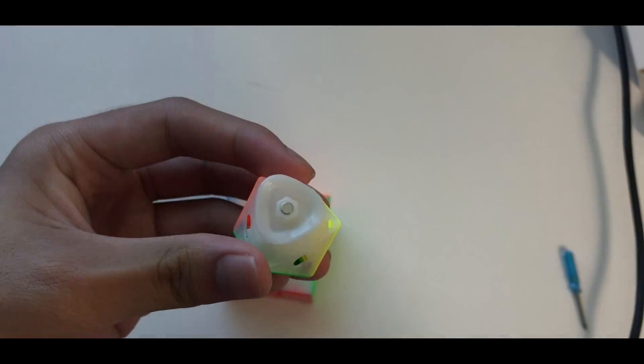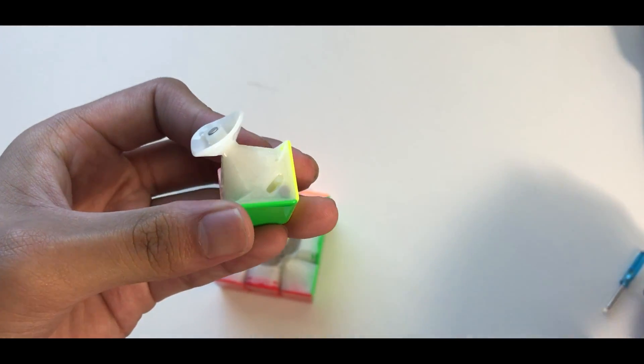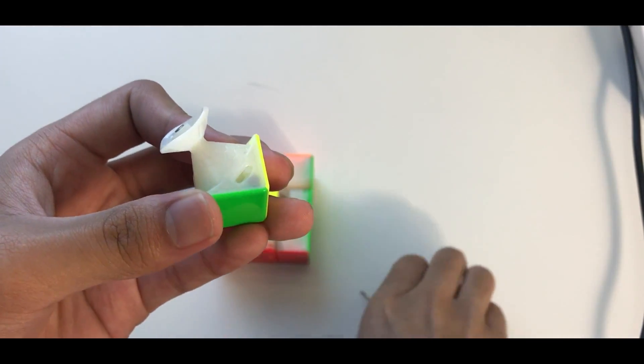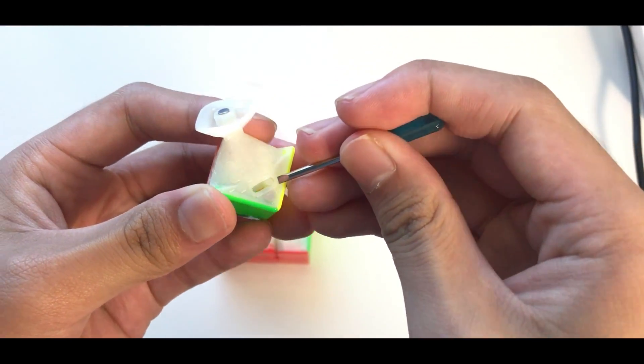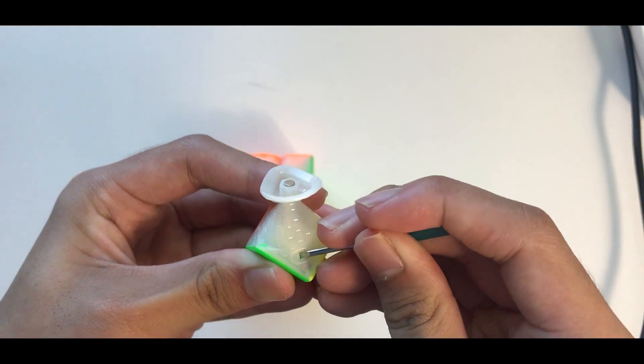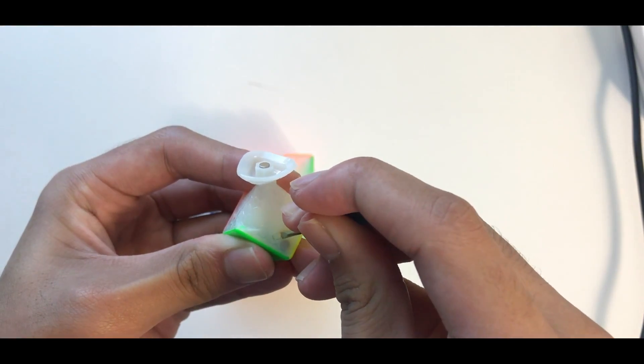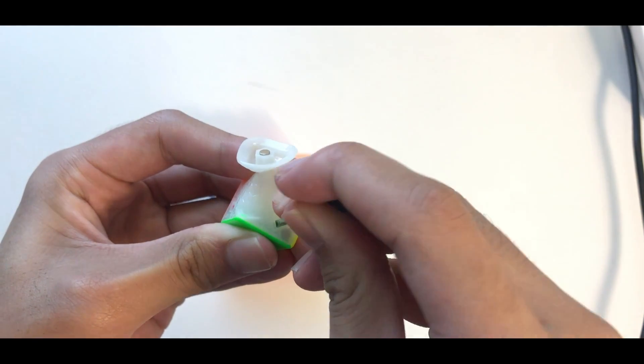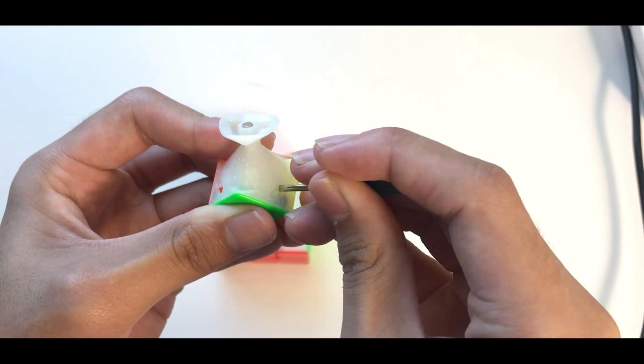And the way you adjust the magnet strength is by getting your screwdriver and there are three settings. One will bring the core magnet away from the core and three will bring it closer. So basically one will be the weakest setting and three will be the strongest setting.